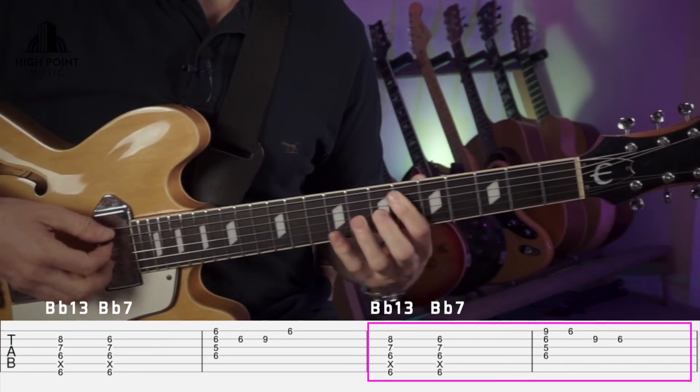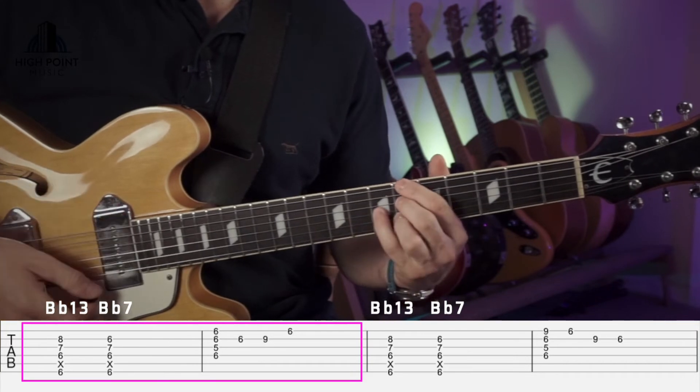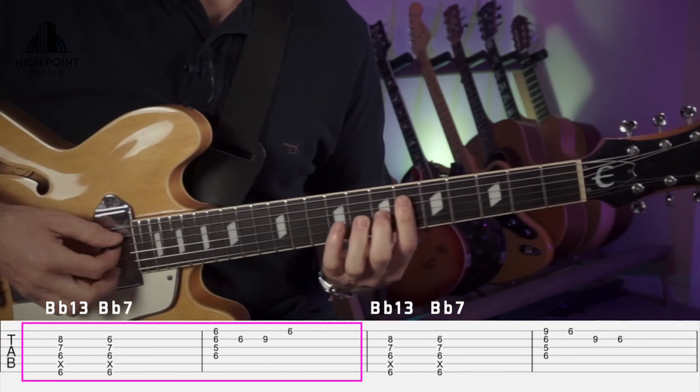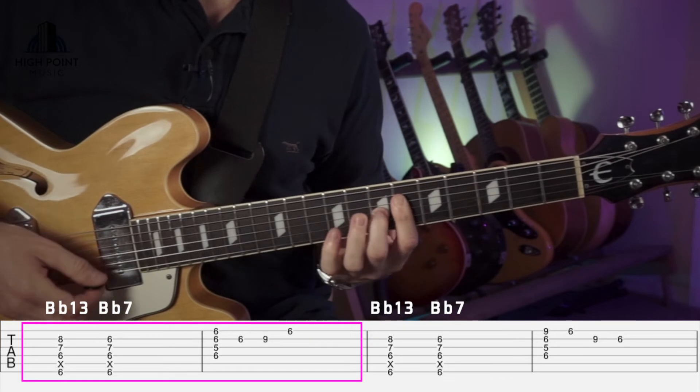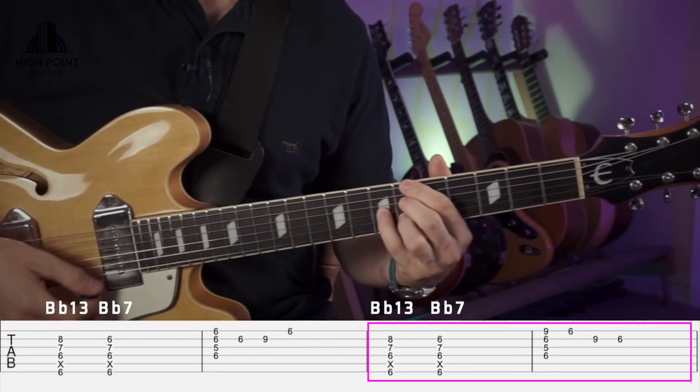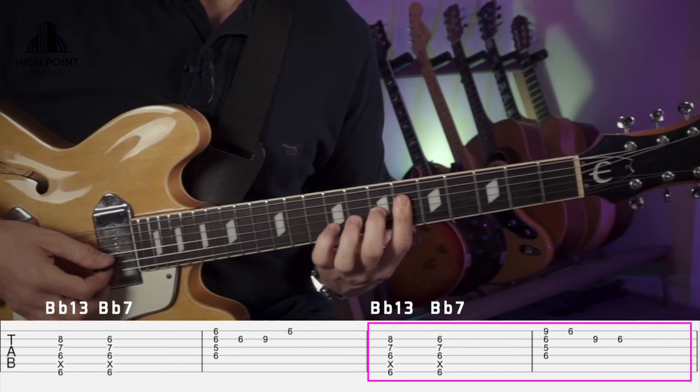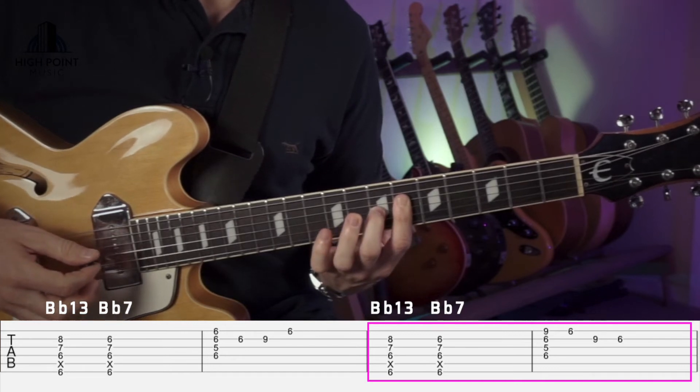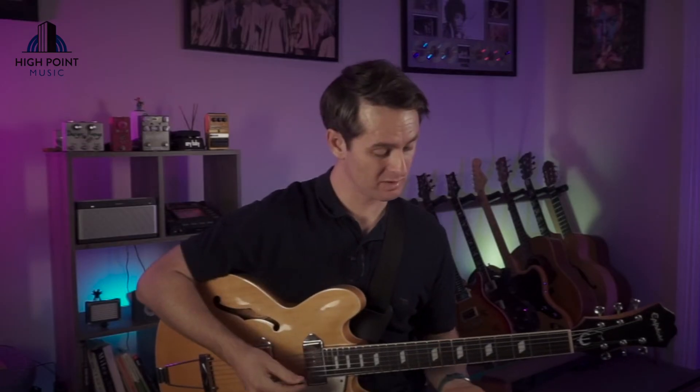I'll do that one more time. The first one, Bb13, and our variation. So when you've got that section moving really well, then we jump in to make an Eb13.